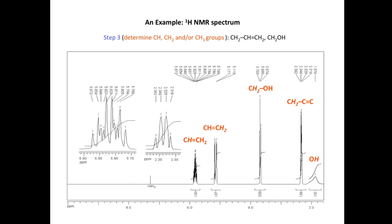Moving on to the 1H NMR spectrum, starting at the high end: signals between 5 and 6 ppm with a relative integration ratio of 1 to 2, consistent with a terminal alkene — one hydrogen on the alkene and two hydrogens at the end of the alkene chain. The signal around 3.5 is consistent with a CH2 next to an alcohol group, assigning an OH adjacent to the CH2. The signal around 2.3, which is a quartet, is consistent with a CH2 adjacent to an alkene. Finally, a very broad signal integrating to approximately one hydrogen is linked to the OH group of an alcohol.